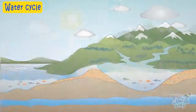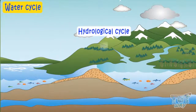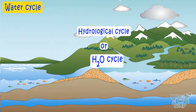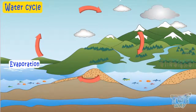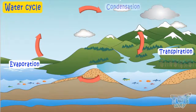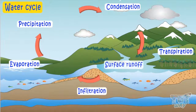The water cycle is also known as the hydrologic cycle or H2O cycle. And the processes by which water changes its states and place are evaporation, transpiration, condensation, precipitation, infiltration, and surface runoff.